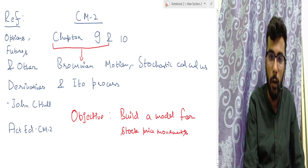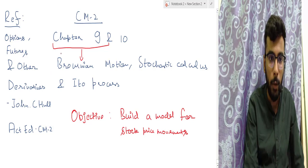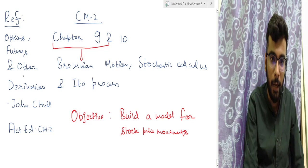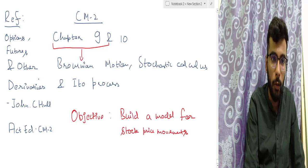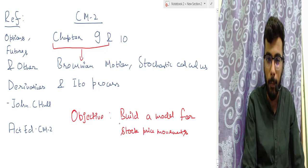The reference for these two chapters that we will be using is the book by John C. Hull called Options, Futures and Other Derivatives. I will be referring to that book a lot. The other reference I will use is the actuarial CM2 material. So if you want to read on your own, these are the books you have to refer to. Otherwise I will be covering everything.